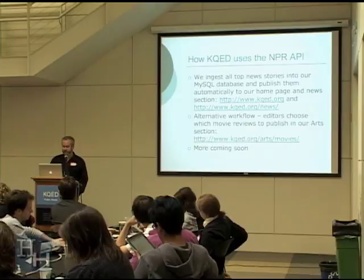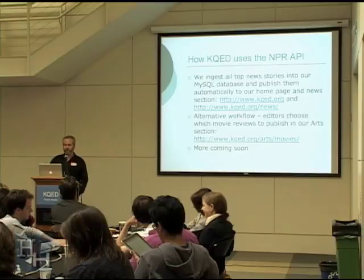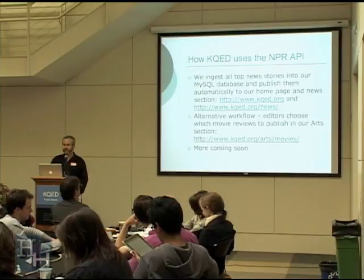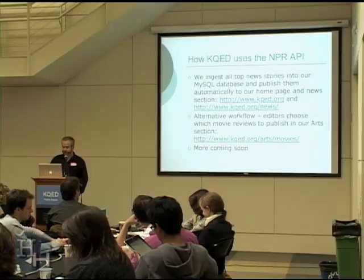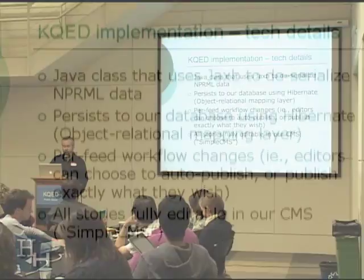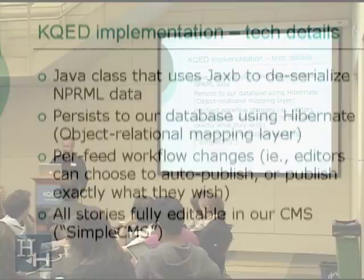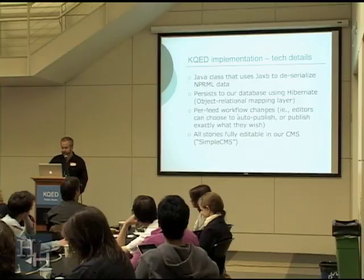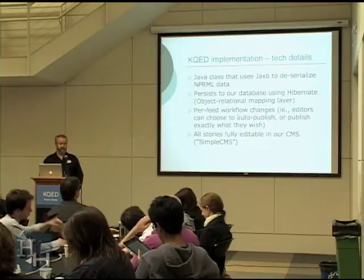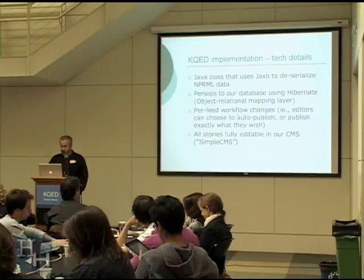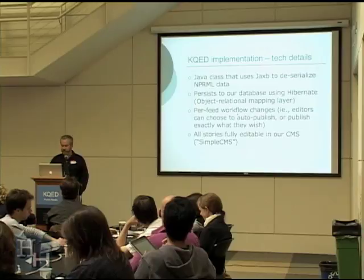Most stations have used the API to render content immediately upon request. But we decided to use it in our content management system so our editors could actually edit the content and add multimedia. We're a Java shop, so we developed a method using JaxB — a popular interface for XML data — to deserialize the NPR ML data and import it into our database using Hibernate, our object relational mapping layer. We have a flexible workflow so editors can choose exactly what schedule they want to publish data in and where it goes. All the stories are fully editable in our CMS, which we call Simple CMS.